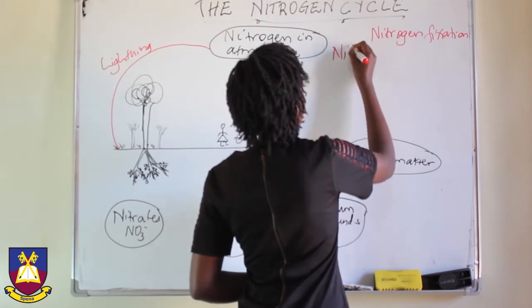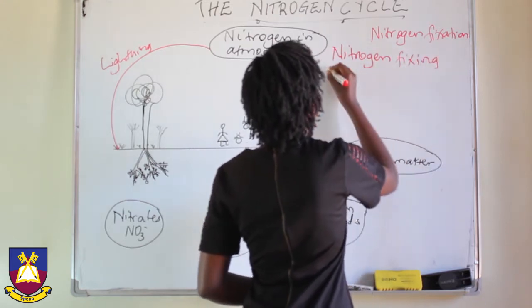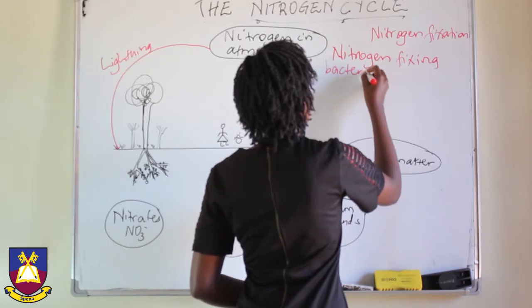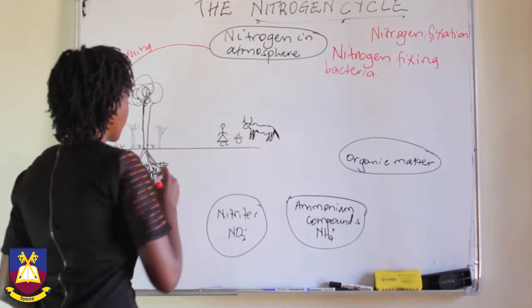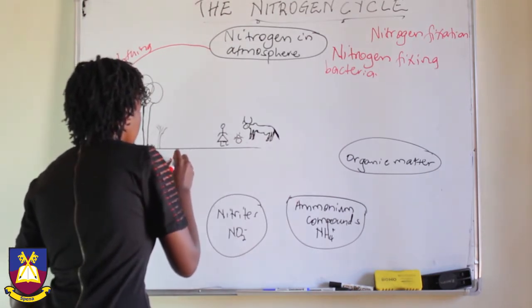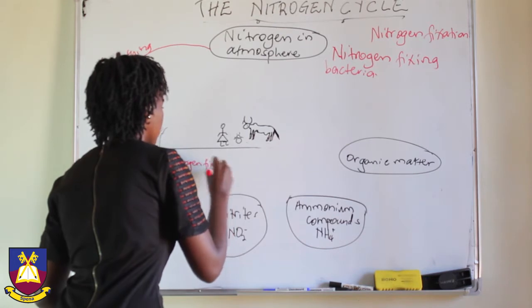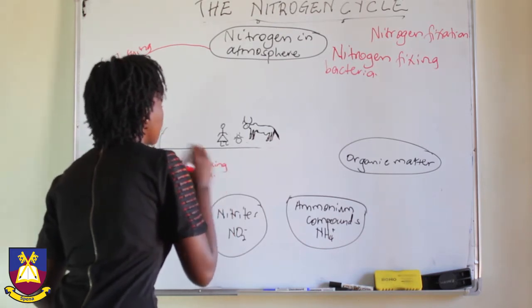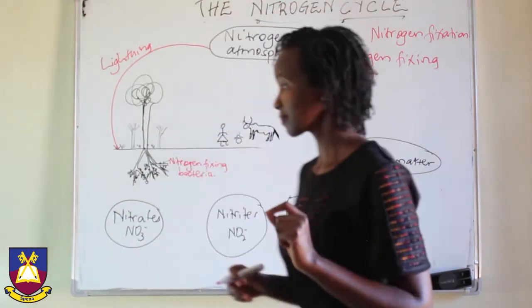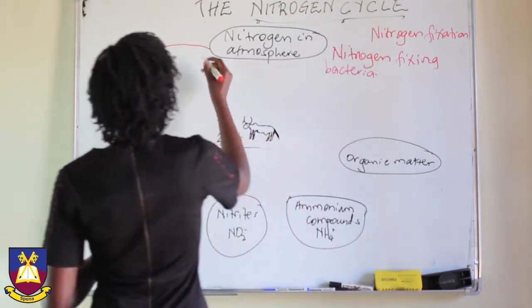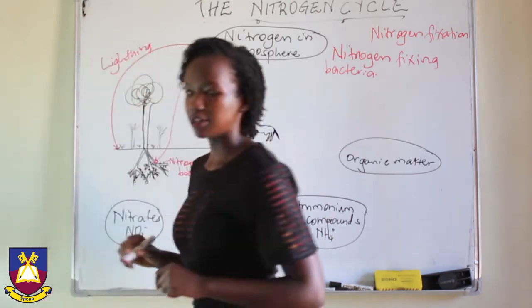These nitrogen-fixing bacteria are found within the roots of especially leguminous plants. They have the capacity of converting nitrogen directly into nitrates. So this is another way nitrogen enters the cycle — through nitrogen-fixing bacteria.